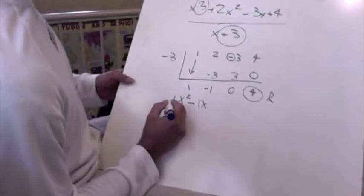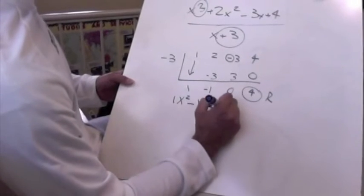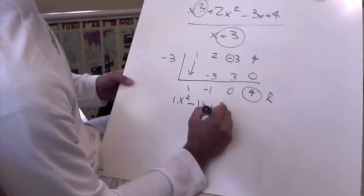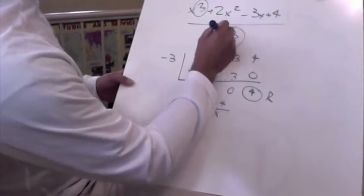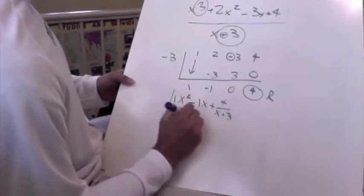So it's going to look like this. It's 1x squared minus 1x plus, because our 4 is positive, plus 4 over x. Going back to our original problem, not our negative, x plus 3. And that's going to be our answer.